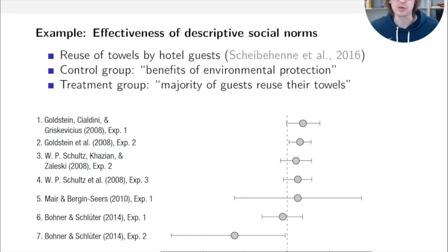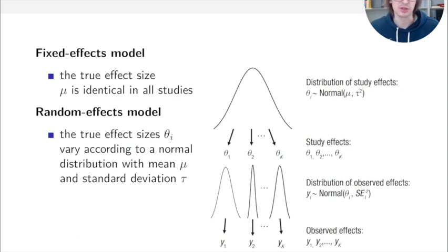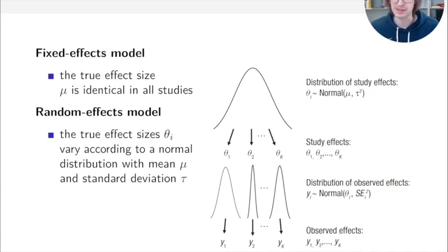The question is how we can aggregate results from the seven studies. In meta-analysis, there are two standard models. The fixed effects model assumes each study has the same constant true effect size mu, identical across all studies. The random effects model assumes each study has a different effect theta_i, varying according to a normal distribution across studies, with parameters mu (average effect size) and tau (standard deviation of effect sizes), where tau is also known as the heterogeneity.